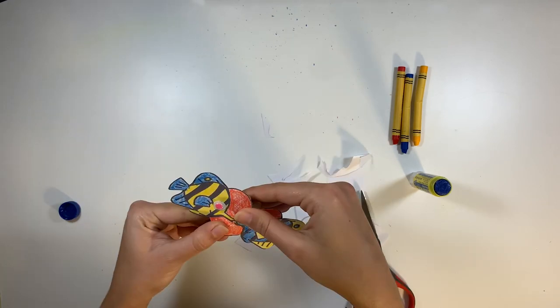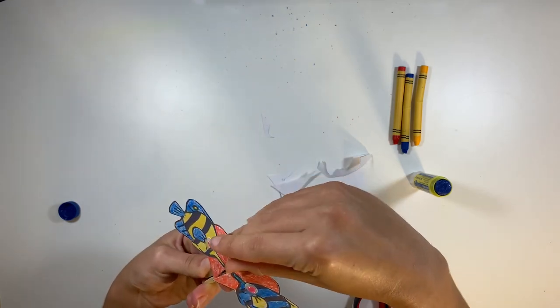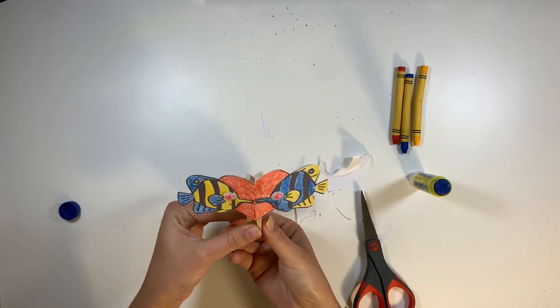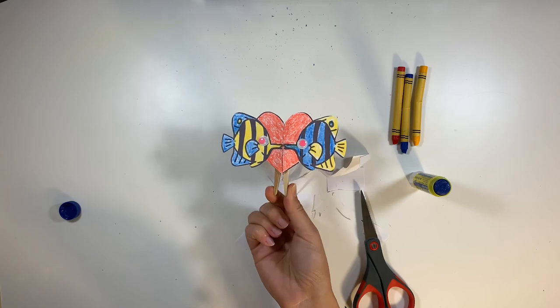Press them down. You can flip them over and press them against the table a little bit. Give them a few seconds or minutes to dry. And then you've got your little kissing fish. Your little kissing butterfly fish.